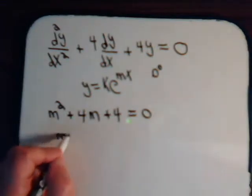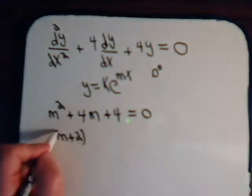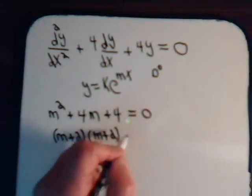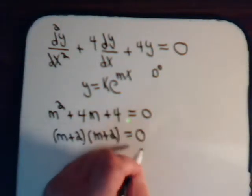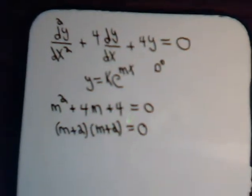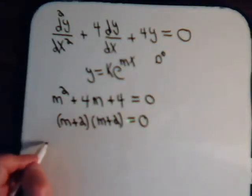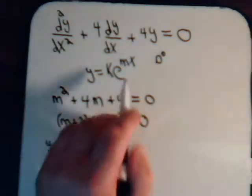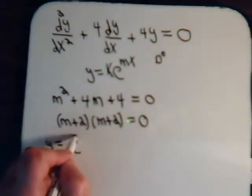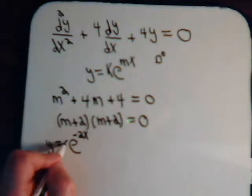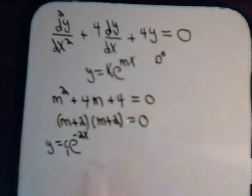We have m plus 2 times m plus 2 equals 0. So the first solution is m here equals minus 2. So y equals e to the minus 2x, and we have it modified by some constant.